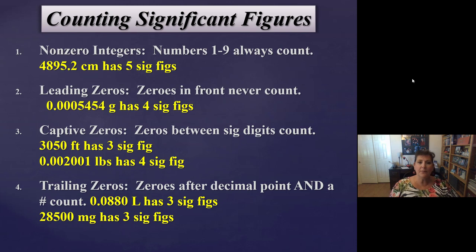All right, rule three, captive zeros. Those are the zeros in between. If you're in between significant figures, then you also count. For example, 3,050 feet. That has three sig figs. The three and the five count, and then the zero in between them counts. If you're in between sig figs, you count. The zero at the end doesn't count. So three, zero, five counts. The zero at the end is what we call a placeholder zero. It's holding the place so that the number is 3,000, not 300. So it's important. It's just not significant.